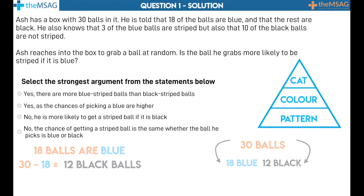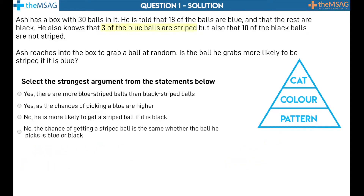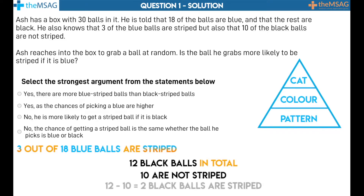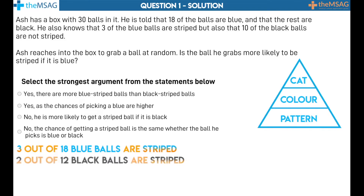Now to move on to pattern. We are told that 3 of the blue balls are striped, so we know that 3 out of the 18 blue balls are striped. Last but not least, we know that there are 12 black coloured balls in total. 10, we are told, are not striped. It can be deduced by doing 12 minus 10 that 2 black balls are striped. So now we know that 2 out of the 12 black balls are striped.